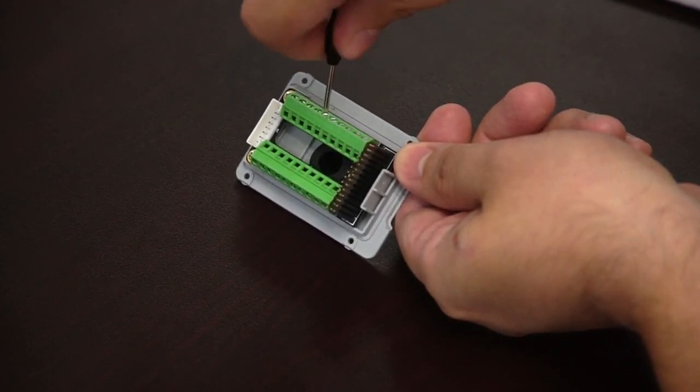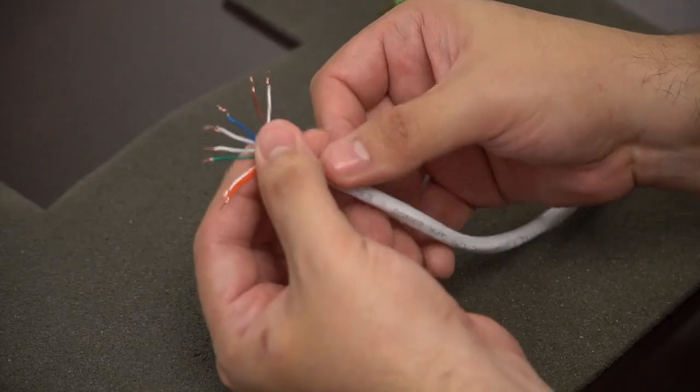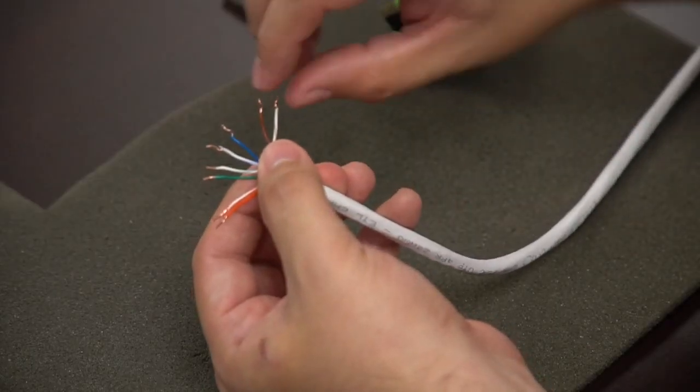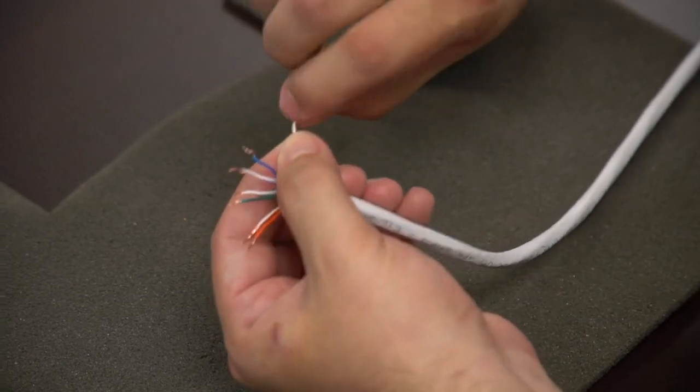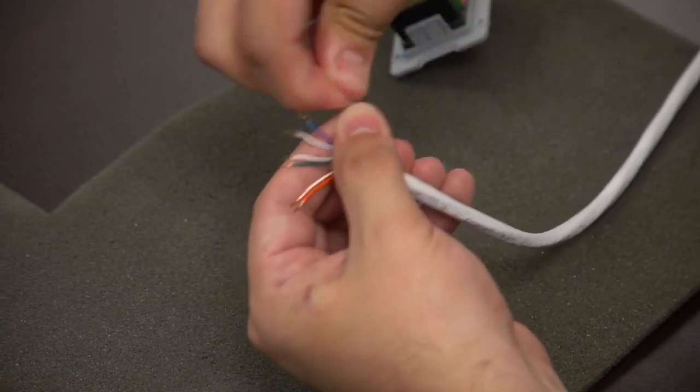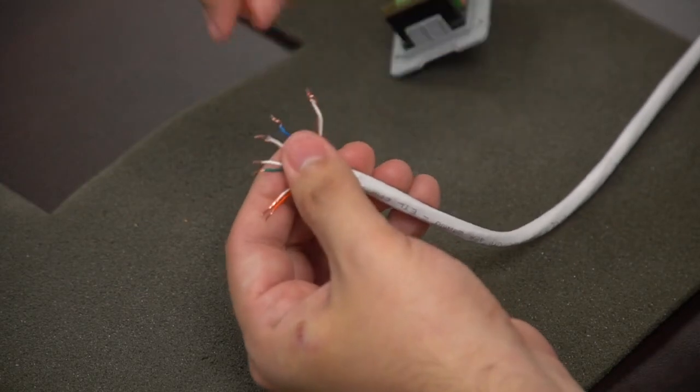But I like to unscrew everything so I know that when I insert a wire, all I have to do is tighten it for it to properly clamp. Now, in order to get the PoE to work, we will have to pair the brown-white and the brown wire and twist them together.